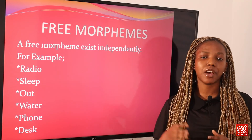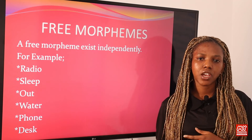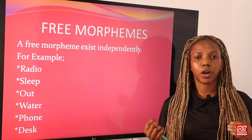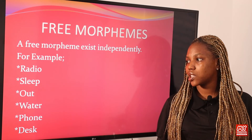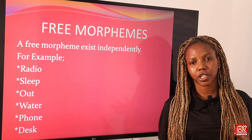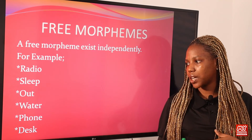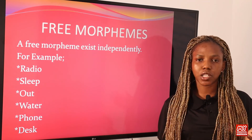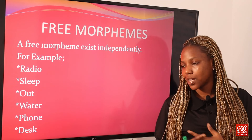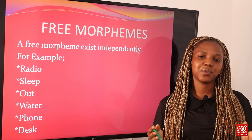A free morpheme plus another free morpheme equals compound words. For example, 'radio' plus 'graph' equals 'radiograph' — a compound word. 'Sleep' plus 'walk' equals 'sleepwalk' — a compound word. 'Out' plus 'let' equals 'outlet' — a compound word. 'Water' plus 'bottle' equals 'water bottle' — a compound word. 'Phone' plus 'book' equals 'phonebook' — a compound word. 'Decks' plus 'tub' equals a compound word. So a free morpheme plus another free morpheme equals a compound word.